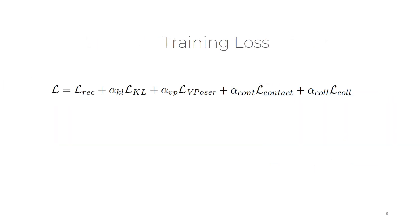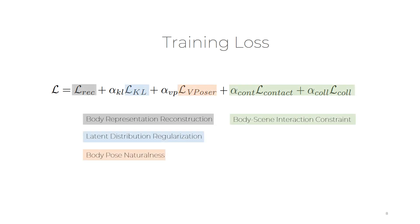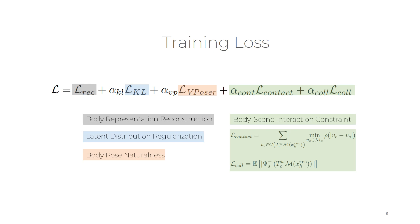With ground-truth scene-body representation pairs, we minimize a loss function to train the model. This loss function consists of five terms. Specifically, the contact term encourages plausible body-scene contact, and the collision term discourages body-scene surface interpenetration.